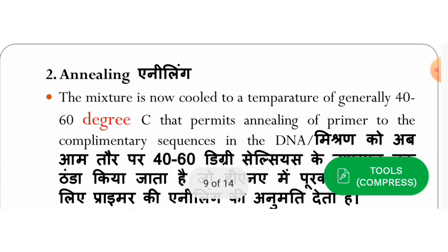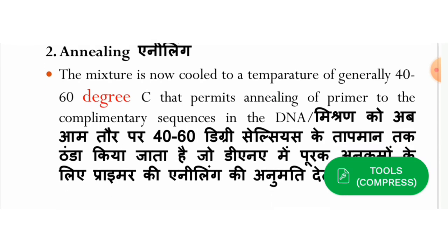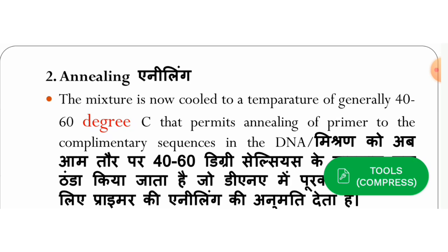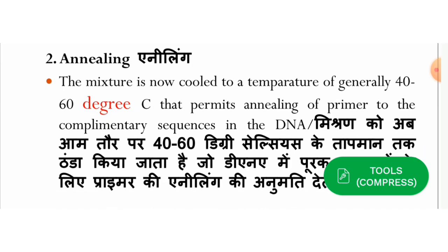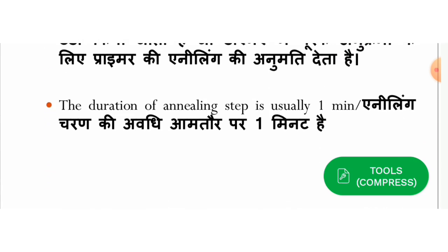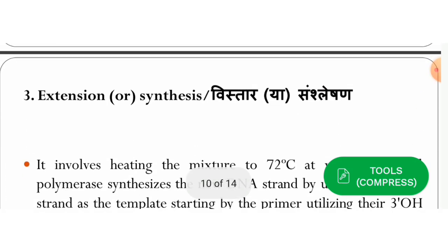The second step is annealing, which means connecting the primer to the complementary sequence — the 3' end sequence of the target. Annealing occurs at a low temperature of around 40–60°C on average, depending on the sequence of the primer, which determines the annealing temperature. This step usually takes about one minute.